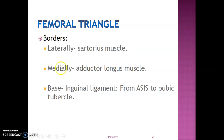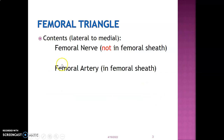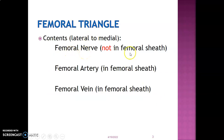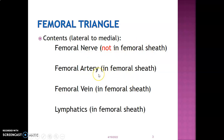The borders of the femoral triangle: laterally is the sartorius muscle, medially is the adductor longus muscle, and the base is formed by the inguinal ligament that runs from the anterior superior iliac spine to the pubic tubercle. From lateral to medial, we have the femoral nerve within the triangle — remember, the femoral nerve is not within the femoral sheath. Then we have the femoral artery and femoral vein, which are within the femoral sheath, and we also have lymphatics contained in the medial compartment of the femoral sheath. These are the contents of the femoral triangle.